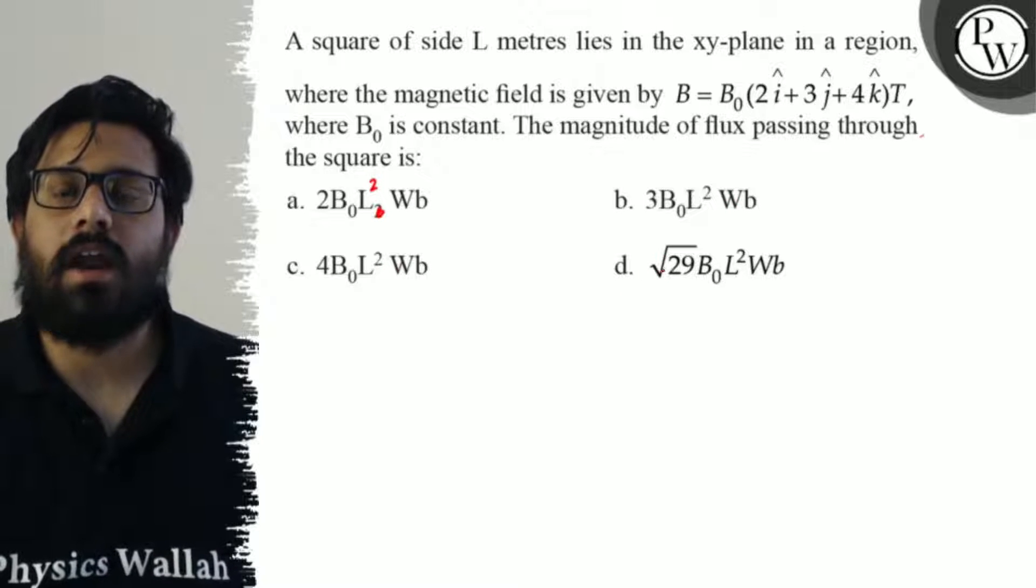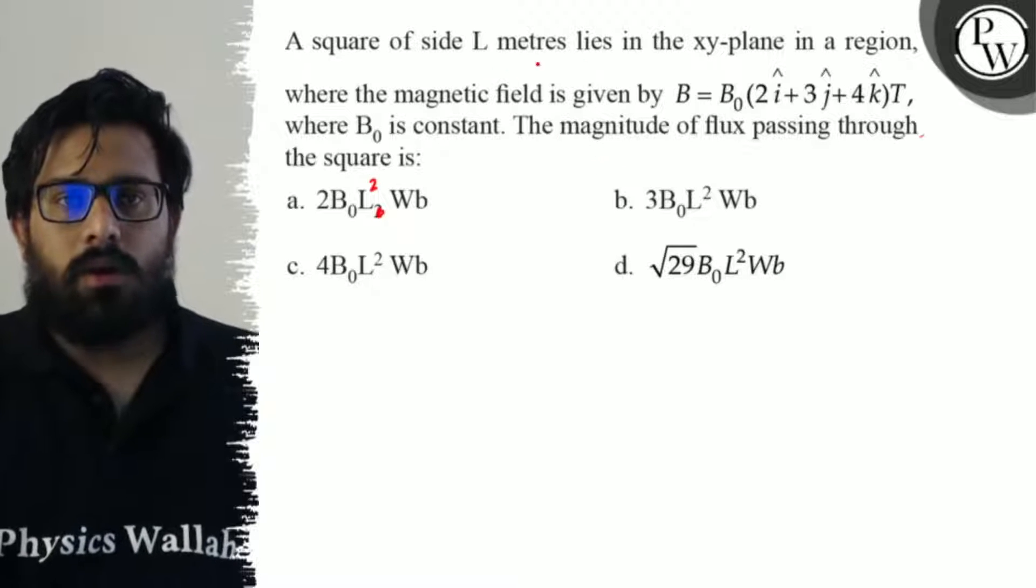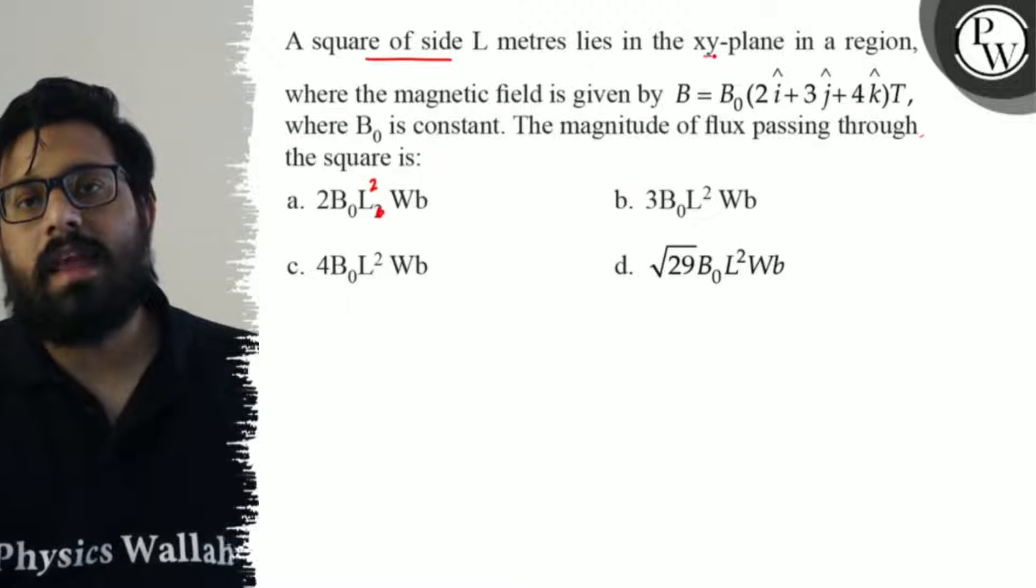Third option is 4B₀L² Weber and fourth option is √29B₀L² Weber.